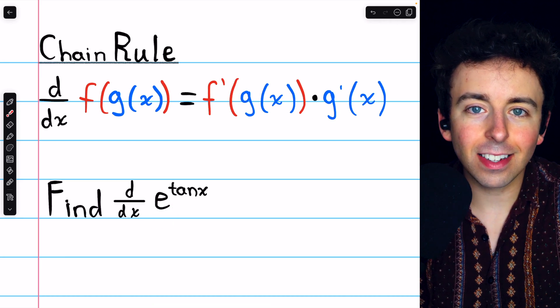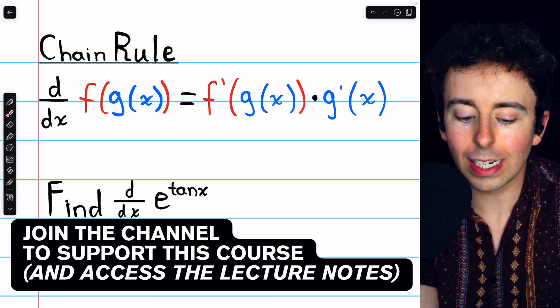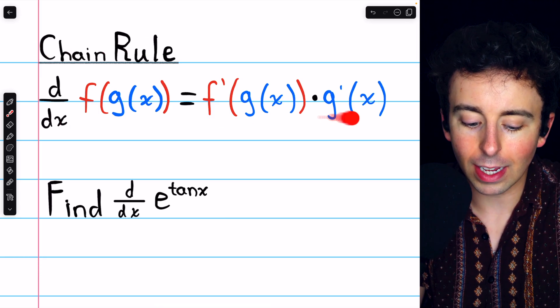e to the tangent x is a composite function, so to take its derivative we'll need the chain rule, which I've written here.